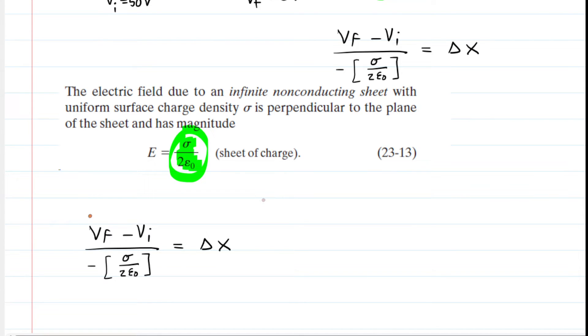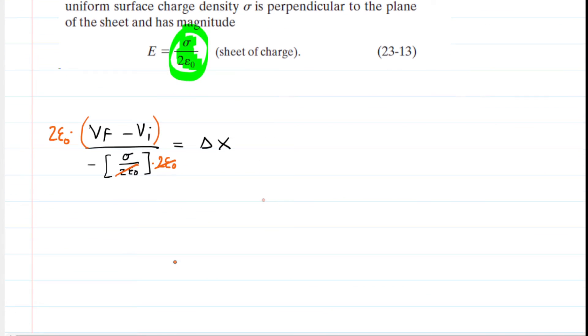There is our expression. Let's copy and paste it below so that we can simplify it. Perhaps the best way to simplify it is to enclose the delta V in parentheses and then multiply the denominator and the numerator by that constant 2 epsilon. If we do that, then the two epsilons will cancel out. Let's go ahead and rewrite the expression.